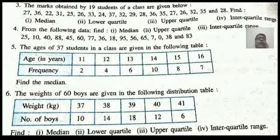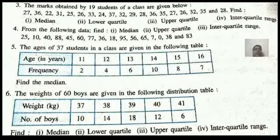Next slide, we have some questions to answer. If you understood all this and thoroughly watched the video, you are in a state to answer the questions given here. First question, the marks obtained by 19 students in a class, given below, so data given: 27, 36, 22, 31, 25, 26, 31, 24, 37, 32, 29, 28, 36, 35, 27, 26, 32, 35, and 28. Find the median, lower quartile, upper quartile, and interquartile range. Similarly, another question like that, you can go through and work out.